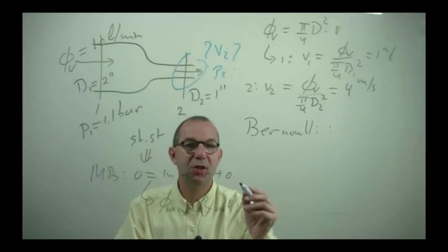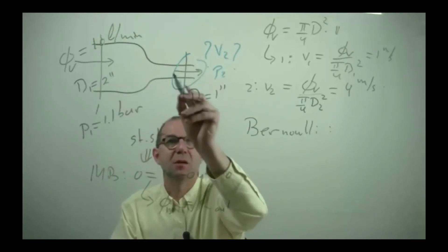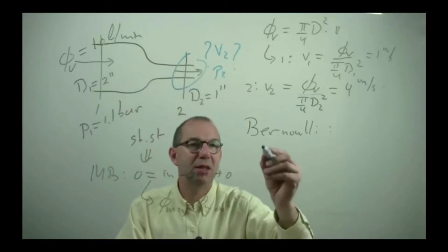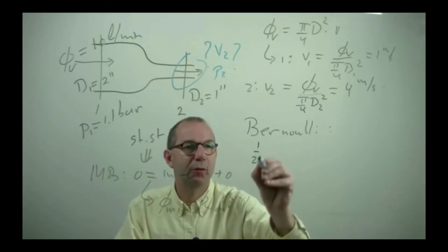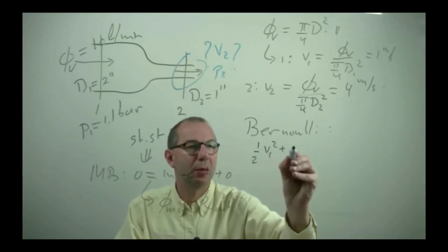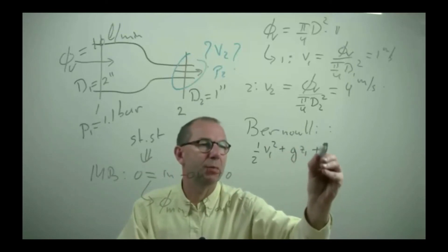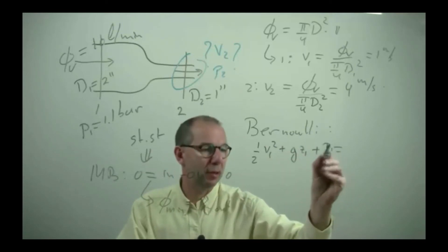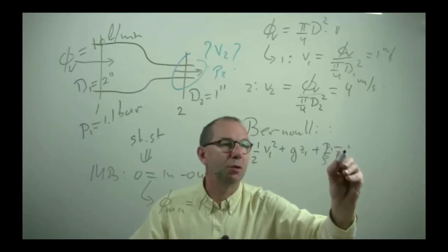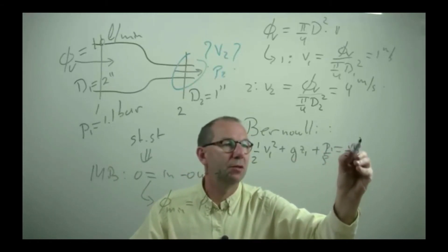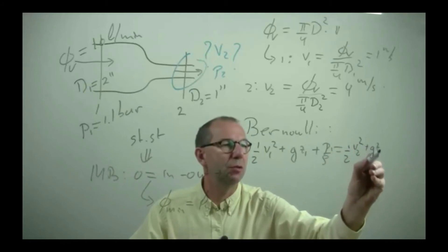And that says that the inflowing mechanical energy must flow out. And in a steady state that means that half V1 squared plus GZ1 the potential energy plus P1 over rho equals the same but then at point 2. So half V2 squared plus GZ2 plus P2 over rho.